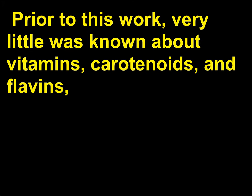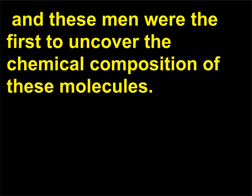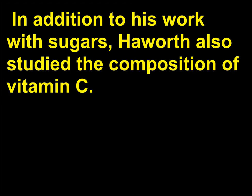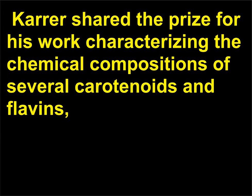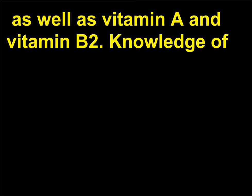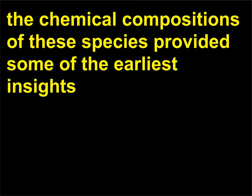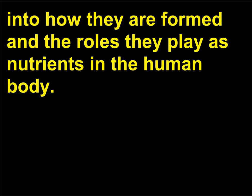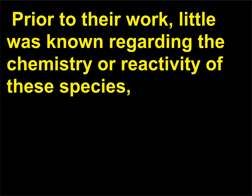Prior to this work, very little was known about vitamins, carotenoids, and flavins, and these men were the first to uncover the chemical composition of these molecules. In addition to his work with sugars, Haworth also studied the composition of vitamin C. Karrer shared the prize for his work characterizing the chemical compositions of several carotenoids and flavins, as well as vitamin A and vitamin B2. Knowledge of the chemical compositions of these species provided some of the earliest insights into how they are formed and the roles they play as nutrients in the human body.